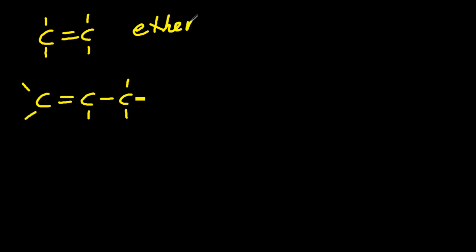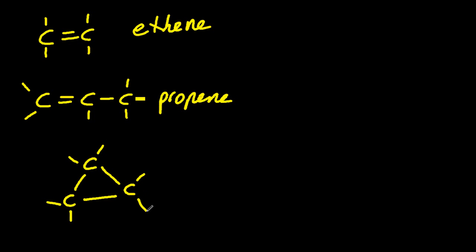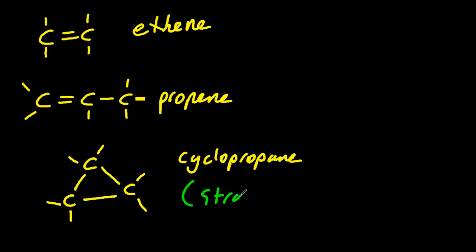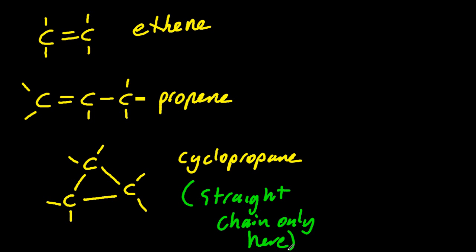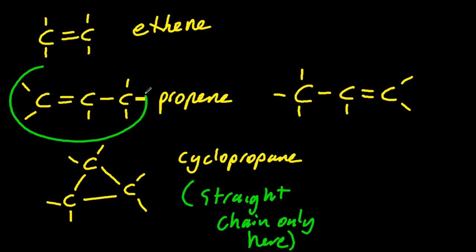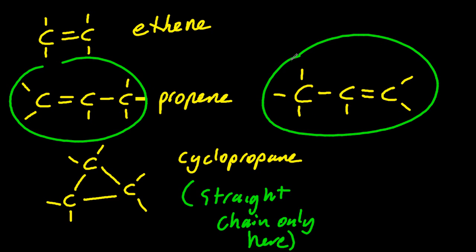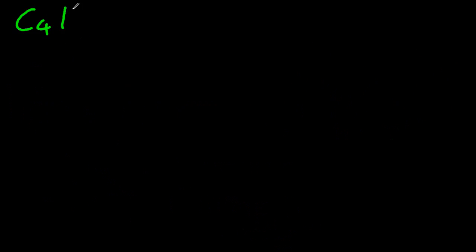Propene — that looks tempting. What about this one? This is actually an isomer of propene, but the IB specifically says no cyclos for SL. So we'll pretend we don't know that one exists: cyclopropane. What about this one? That looks like a different isomer. No, it's just reversed. So there is, in fact, only one isomer that's an alkene of propene.